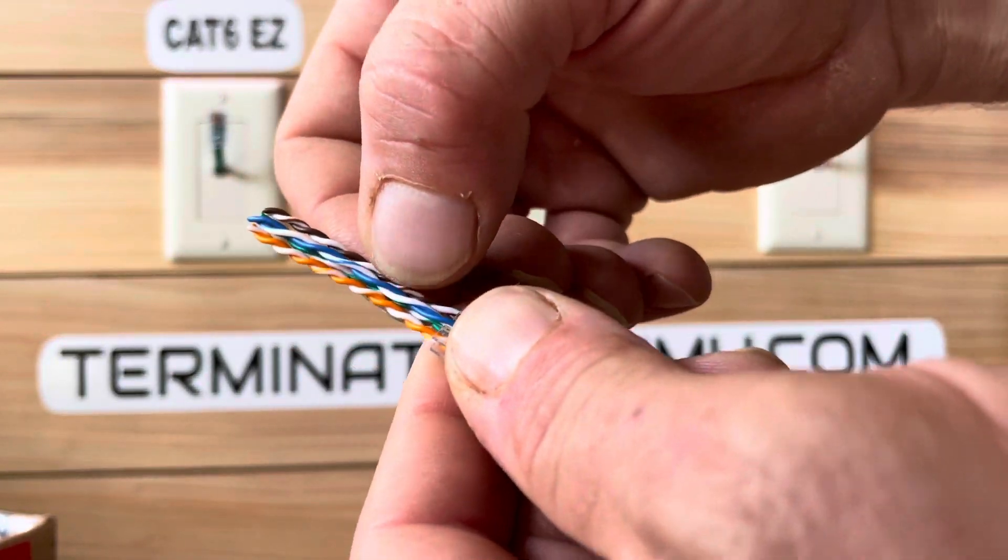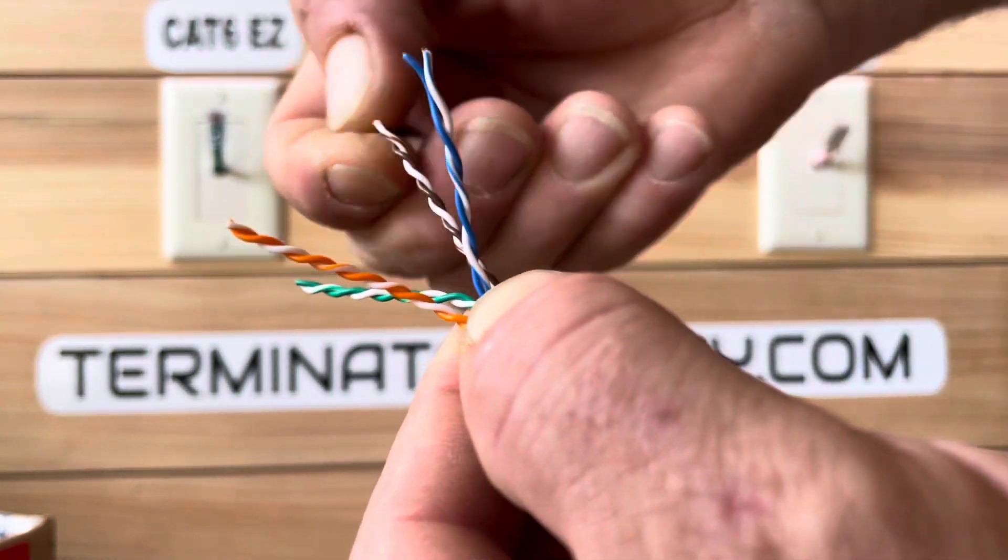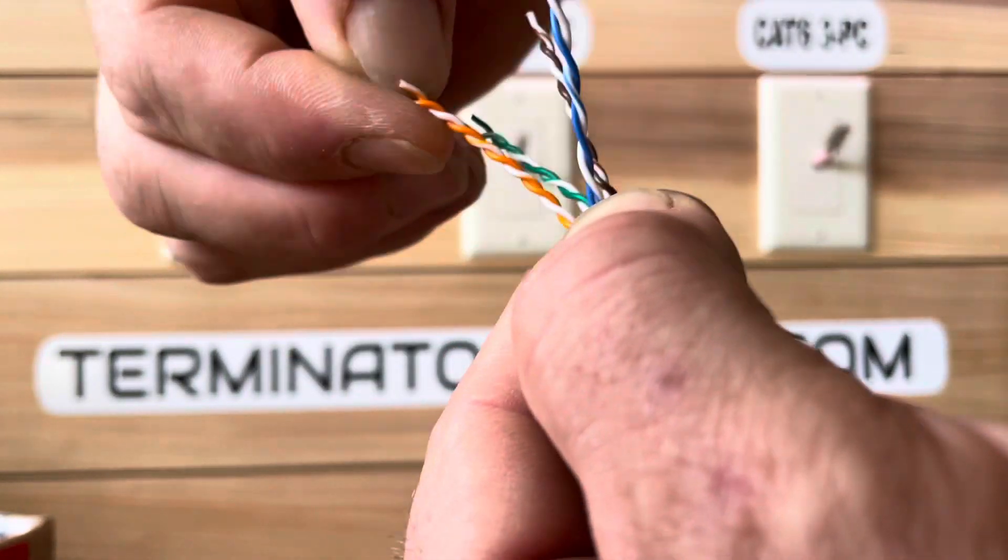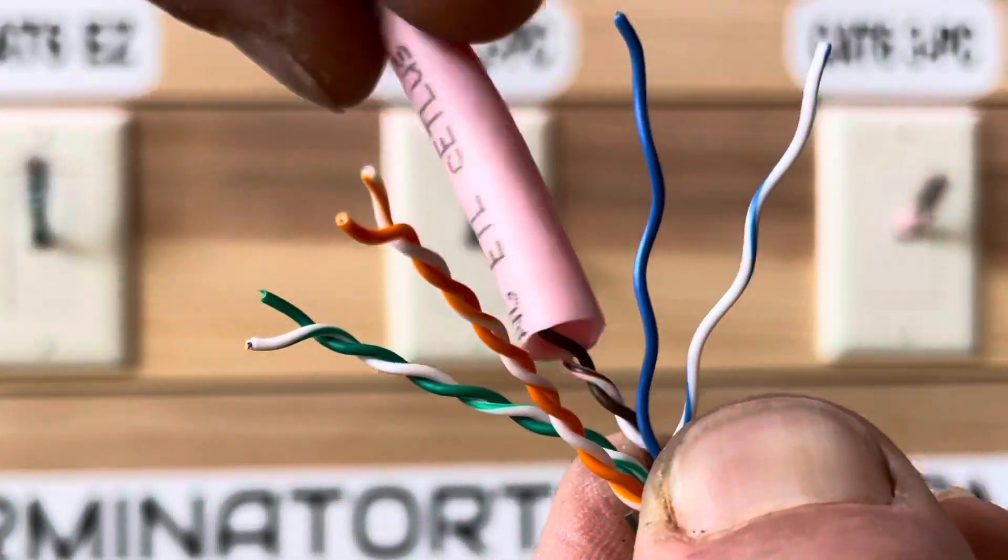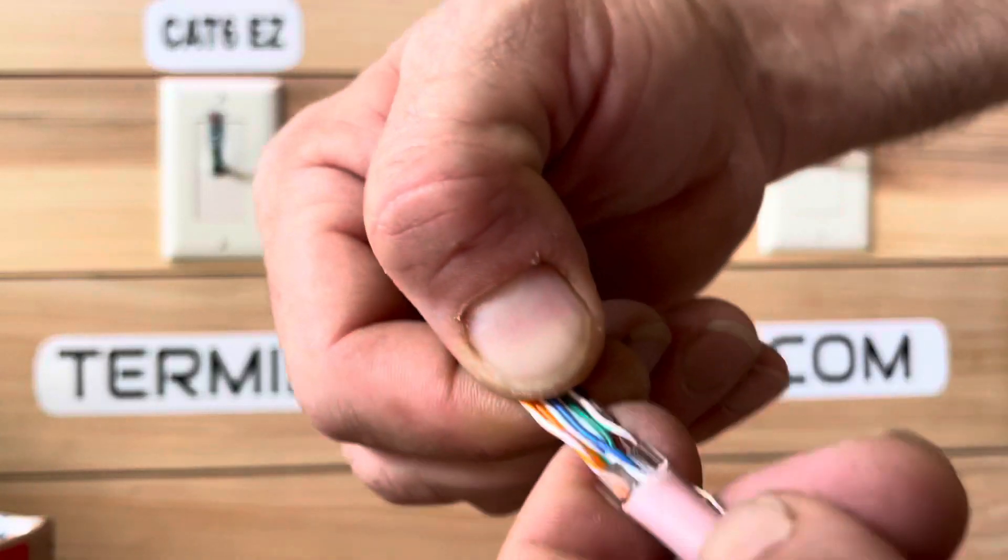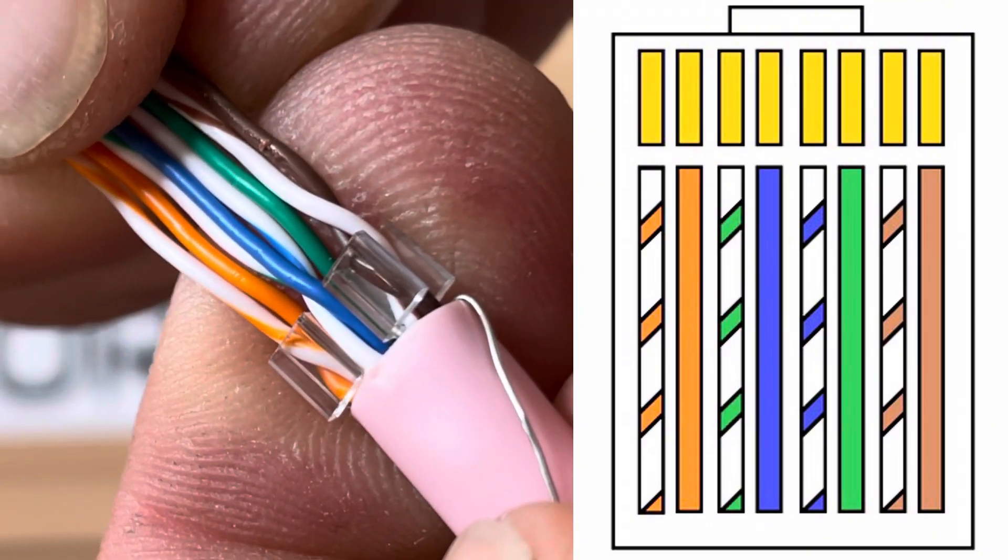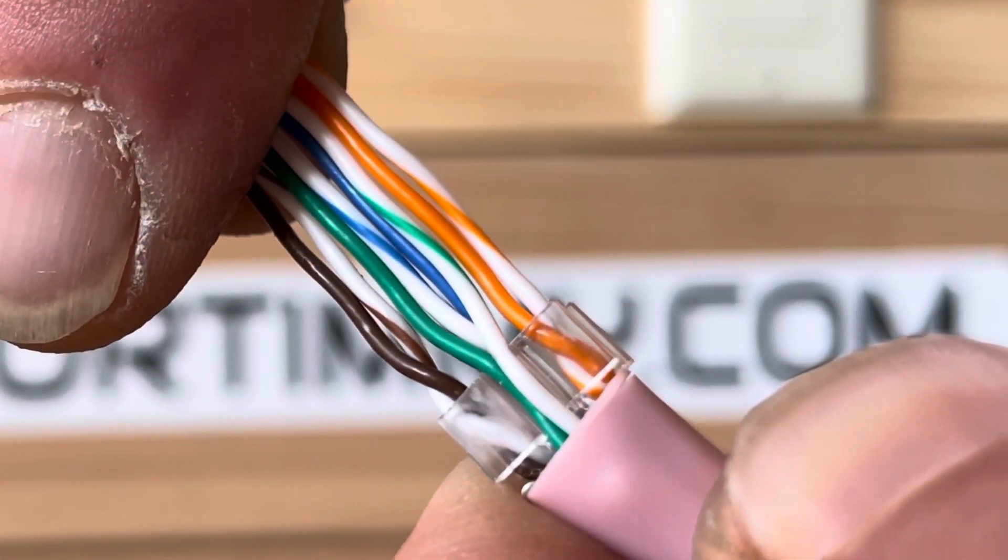We will now prep the wire for the second piece by pinching the tips of each of the wires and using our scrap cutoff to untwist each pair. We will be using the B configuration as seen here, making sure that they are straight and flat.